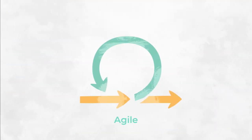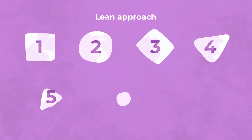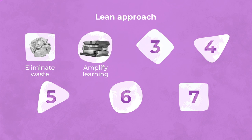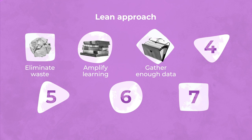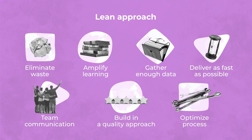Lean development complements agile, as it suggests a conceptual approach to fulfill business objectives, while agile concerns the technical aspects of how development should go. According to lean, there are seven key principles: eliminate waste, amplify learning, decide as late as possible to gather enough data and dissolve uncertainties, deliver as fast as possible, empower the team to communicate and decide together, build in quality, and optimize the whole process.